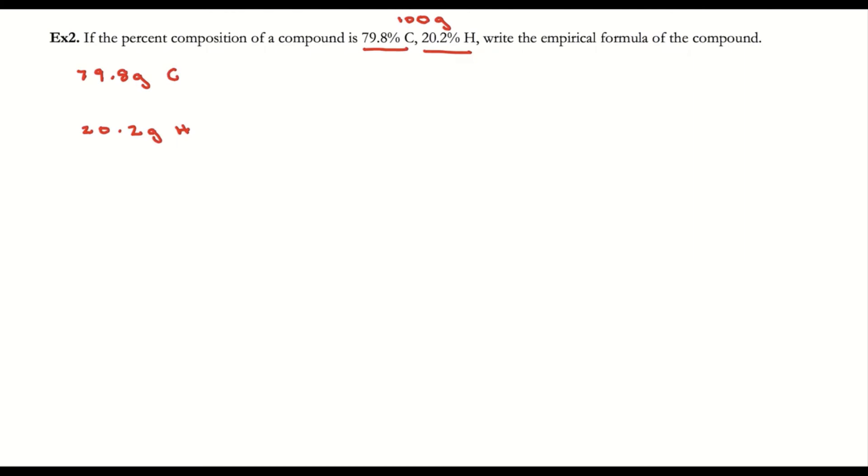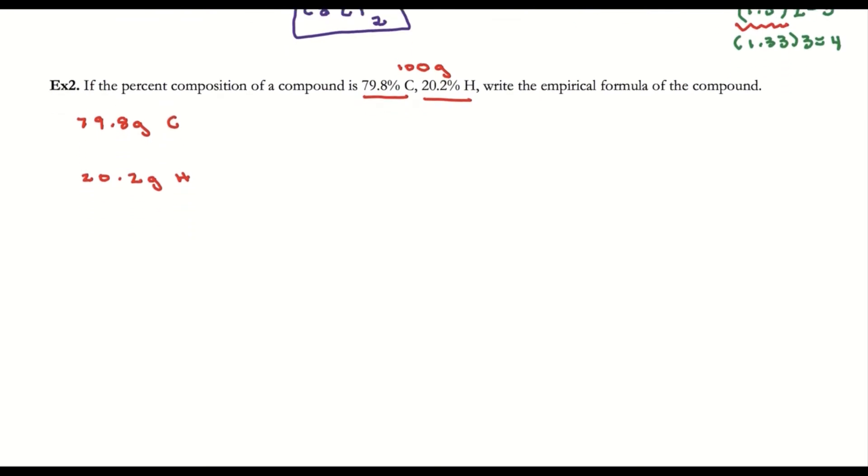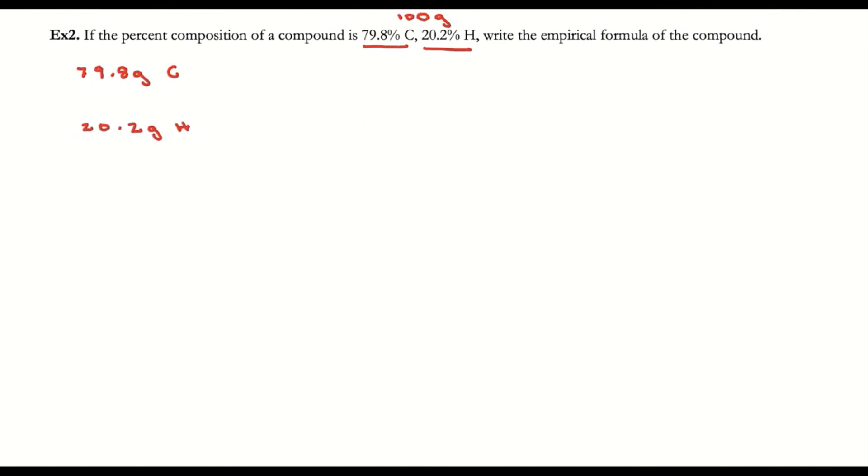When you're given percents, you can assume your total sample size is 100 grams and just convert those percents into grams. You'll ultimately get the same answer because we're dividing by the smallest number of moles. I think multiplying by 100 is easiest because you're literally taking the percent and making it into grams.